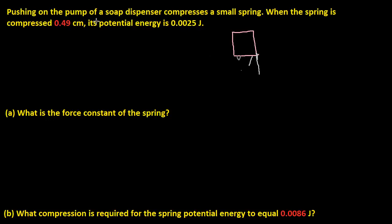So we have a soap dispenser here, and the question is asking, pushing on a soap dispenser pump compresses a small spring, which is like inside here somewhere, and when the spring is compressed by 0.49 centimeters, its potential energy is 0.0025 joules.